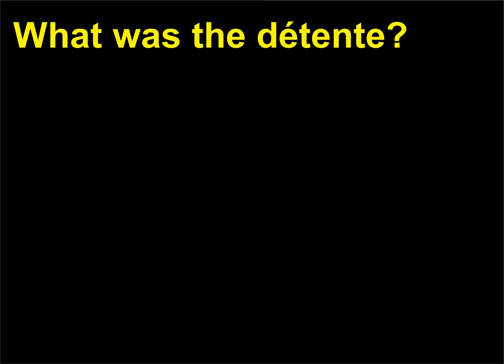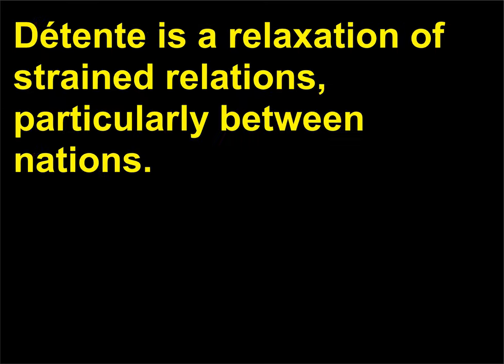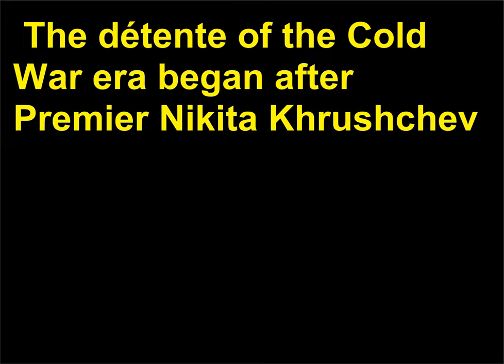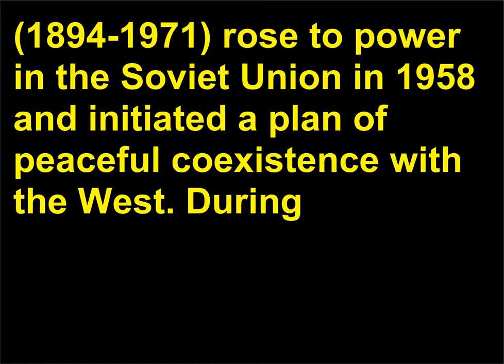What was the détente? Détente is a relaxation of strained relations, particularly between nations. The détente of the Cold War era began after Premier Nikita Khrushchev, 1894–1971, rose to power in the Soviet Union in 1958 and initiated a plan of peaceful coexistence with the West.